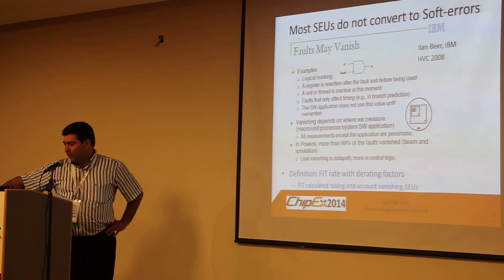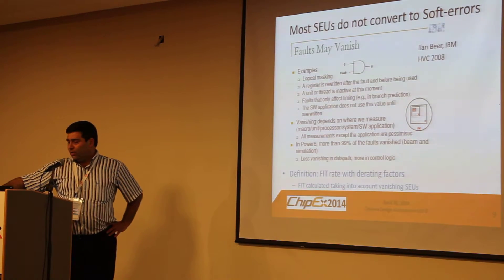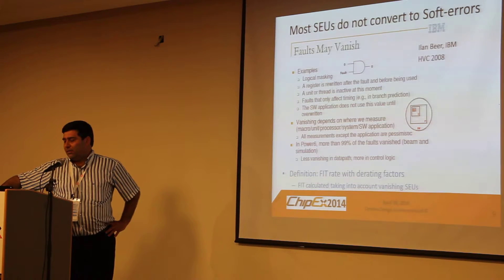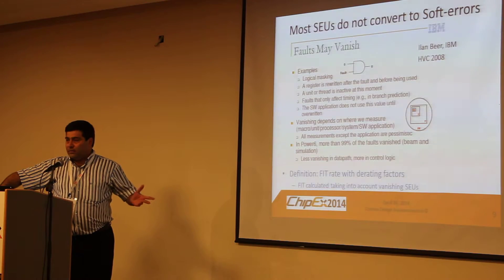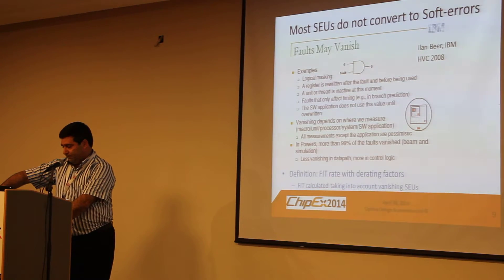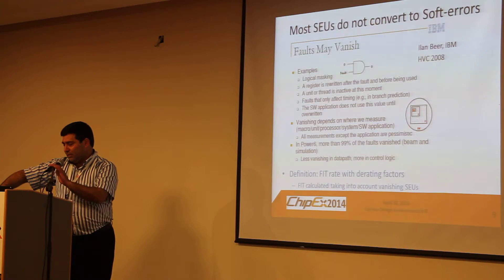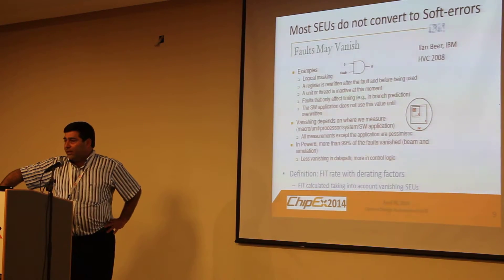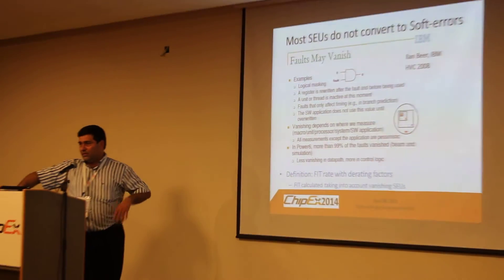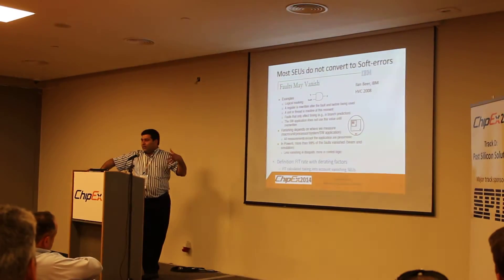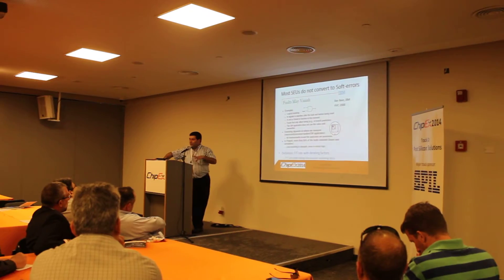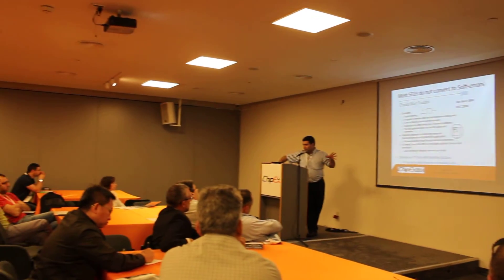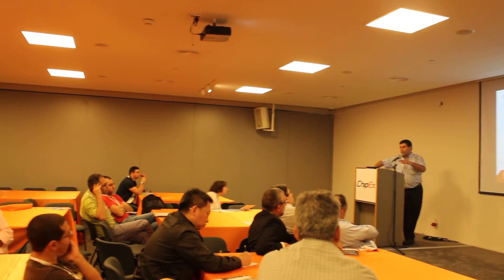This is a paper by Ilan Beer from 2008, discussing the discovery that in the Power 6 CPU, 99% of errors don't propagate. One definition is FIT rate with derating factors. Without derating factors, we simply take all the flops in the system, multiply by the FIT rate of each flop, and get the total FIT rate.